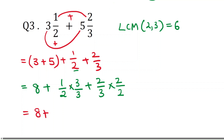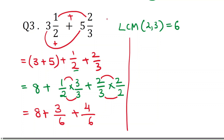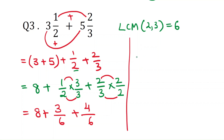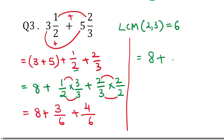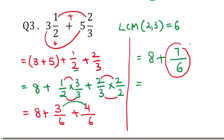So we have 8 plus 3/6 plus 4/6. The common denominator is 6, so add the numerators: 3 plus 4 is 7. We get 8 plus 7/6. But 7/6 is an improper fraction — the numerator is greater than the denominator.